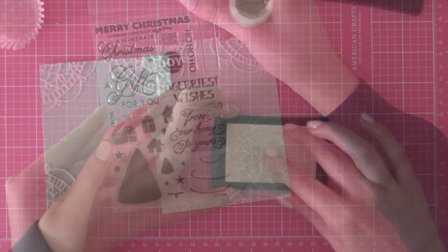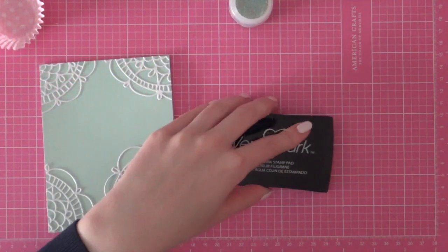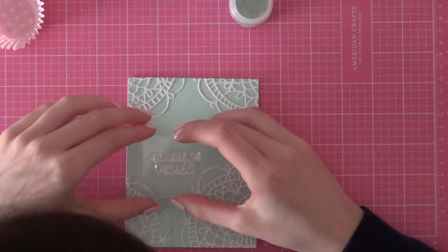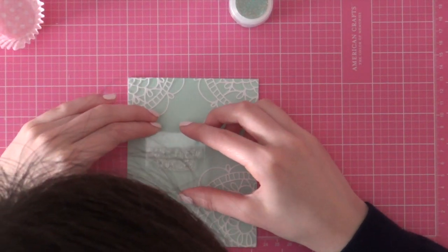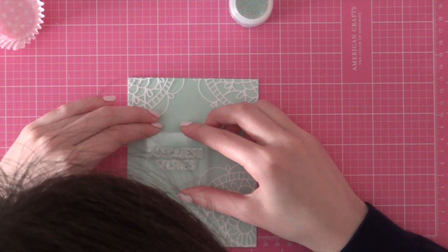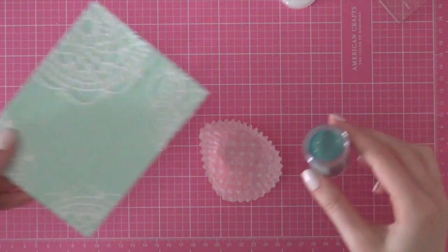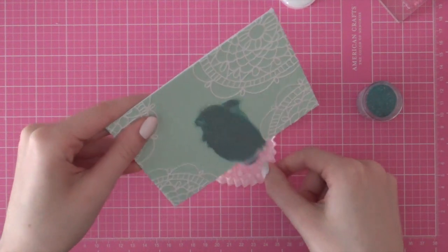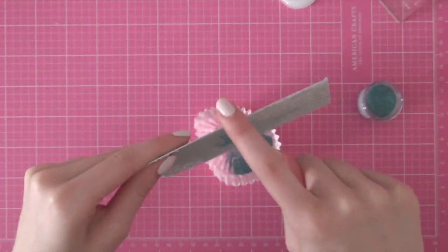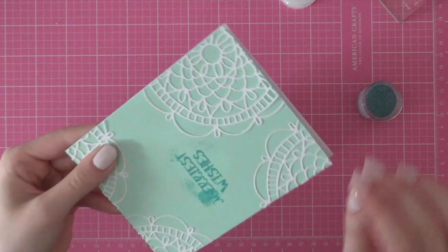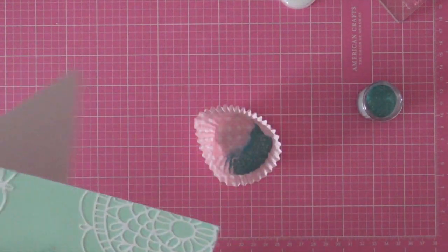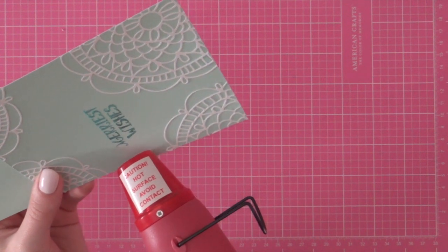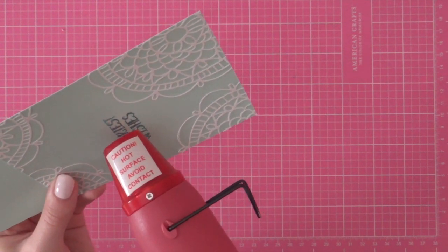Then I am using the homemade Christmas stamp set from Waffle Flower and I am going to stamp one of the greetings onto my note card using Versamark ink since I will be doing some heat embossing. I am using the Long Island Teal Embossing Powder by WOW. This is one of my favorite embossing powders lately and I really love to use it with the cardstock that I am using right now. This is cardstock by Hero Arts and this is the Shallows color.